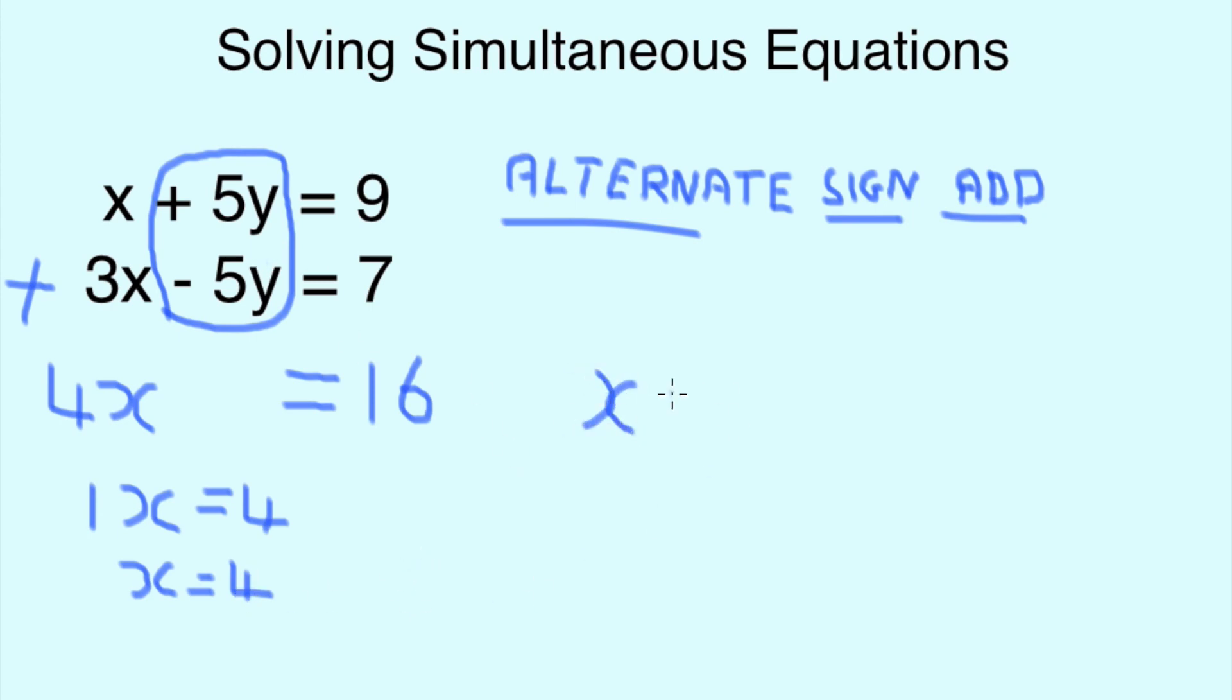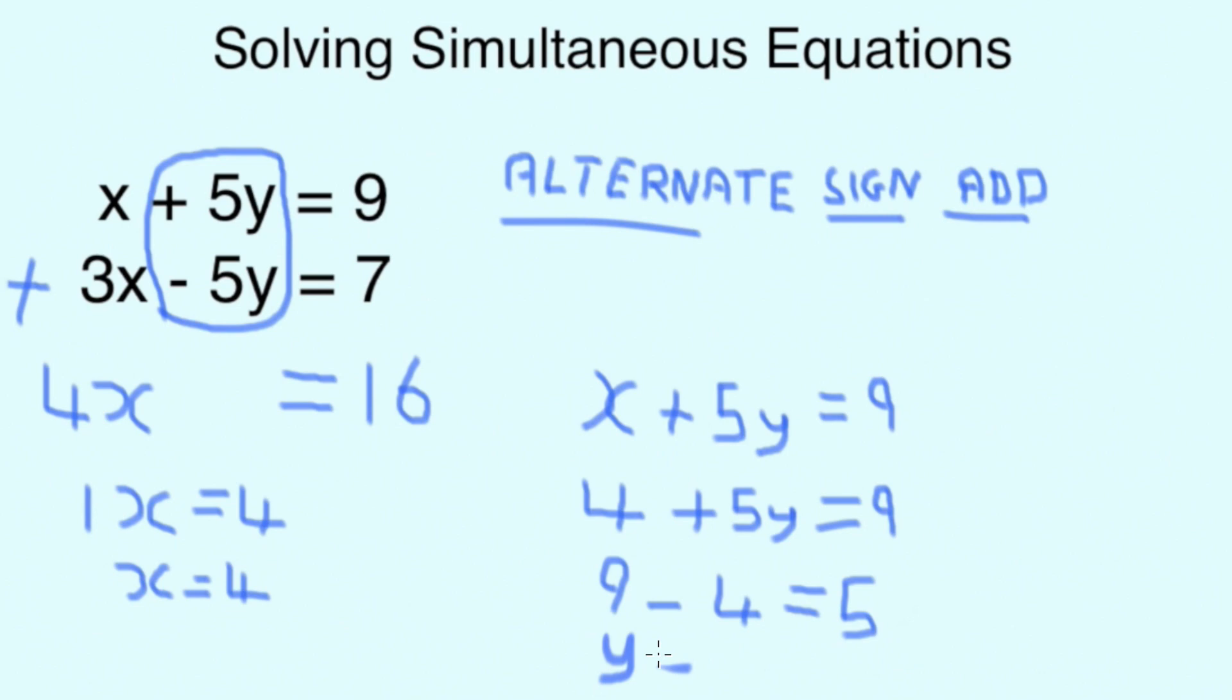So, the same as the last time, we need to figure out the value of y. So, if we know that x is equal to 4, then we can rewrite the first equation again, substituting the x that we had before for the 4 that we know it is now. 4 plus 5y equals 9. So, if we turn that around, 9 minus 4 equals 5. Therefore, y equals 1.